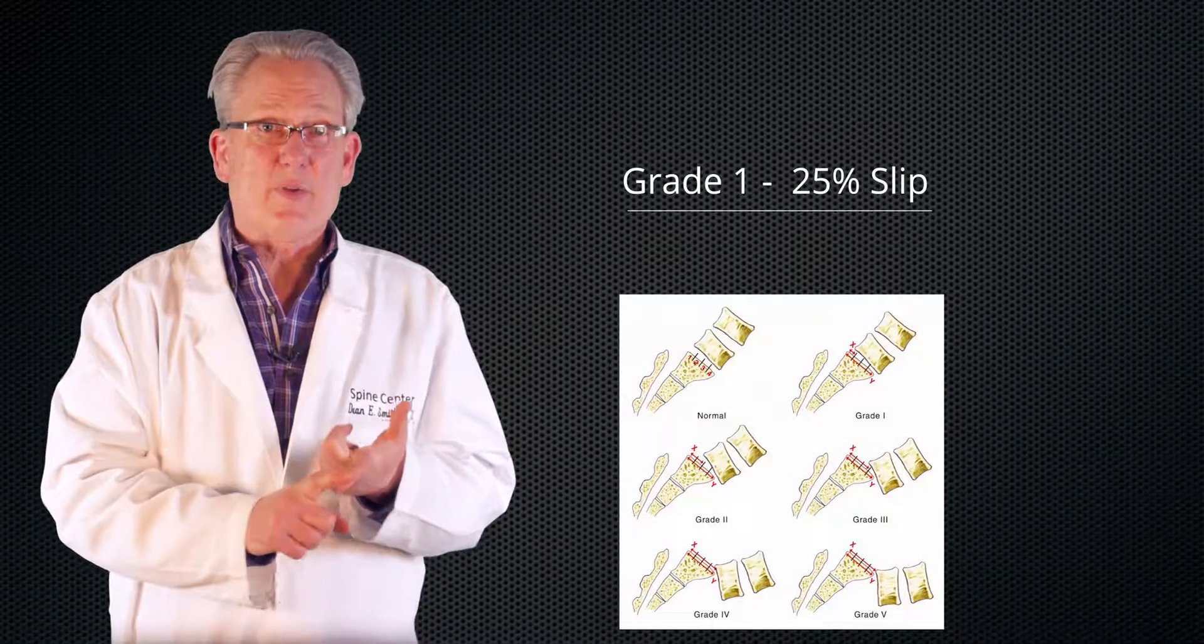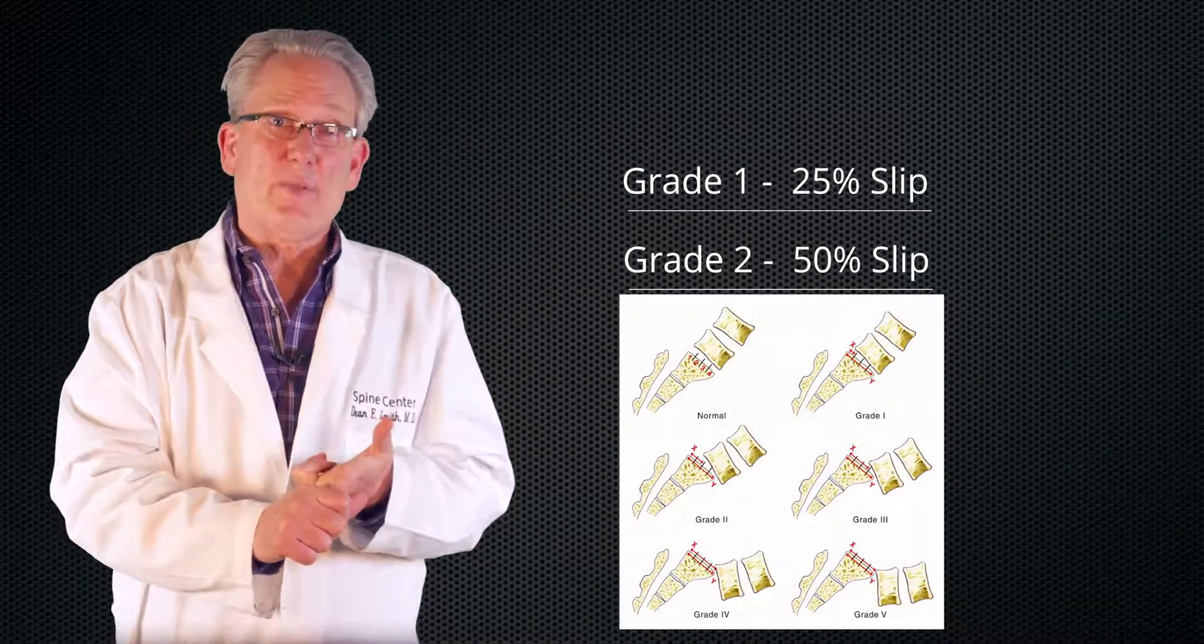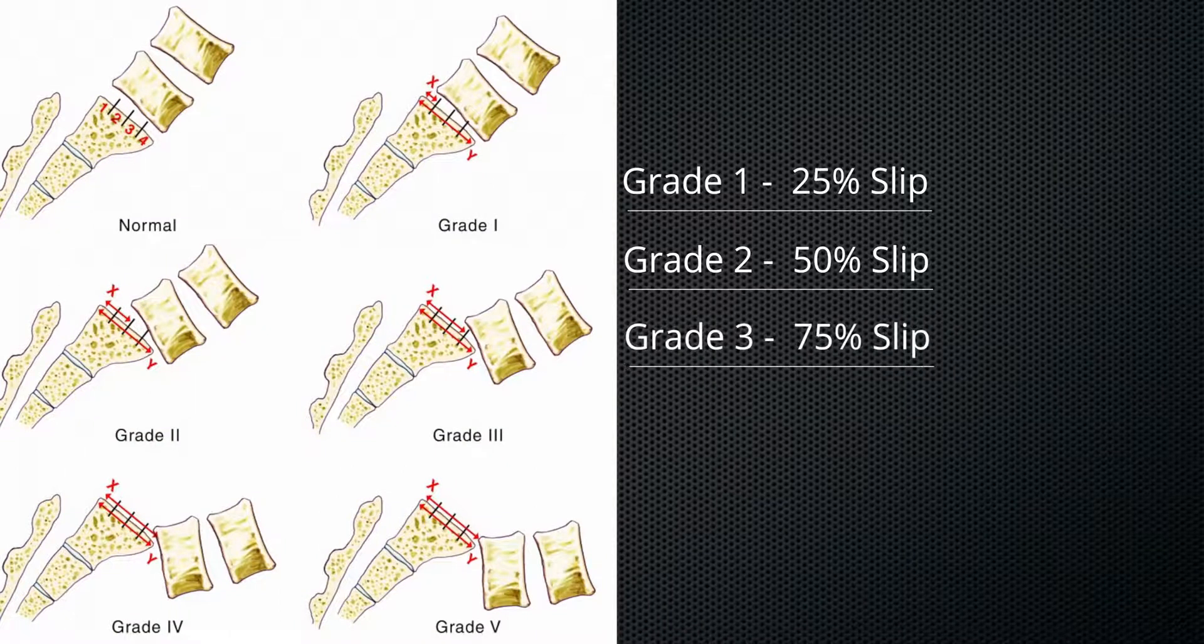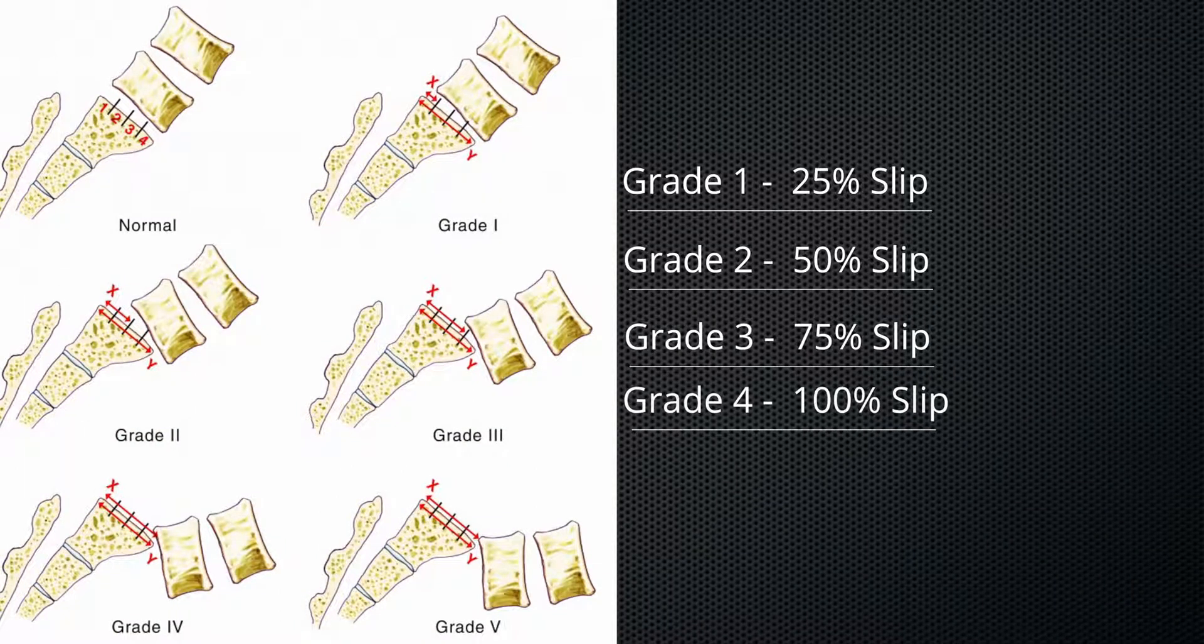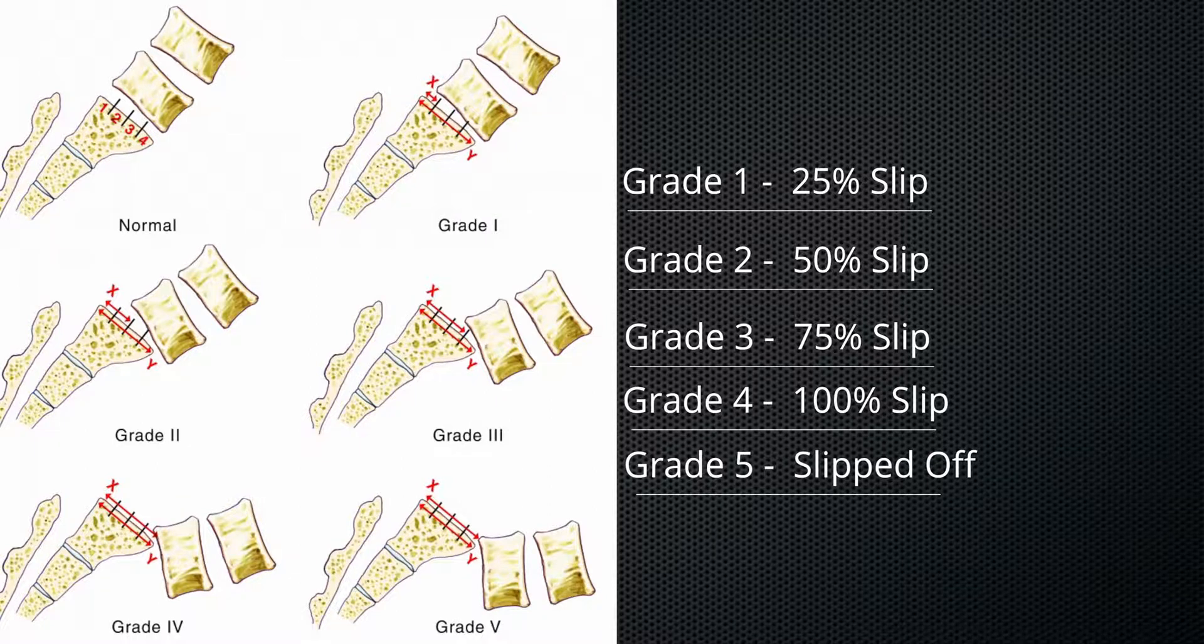Now spondylolisthesis are categorized according to how far they've slipped. A grade one slips 25%, a grade two spondylolisthesis is 50%, three is 75%, four is 100%, and a grade five spondylolisthesis is where it slipped completely off.